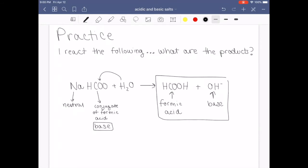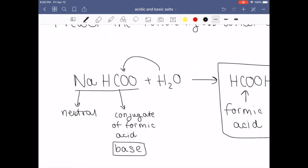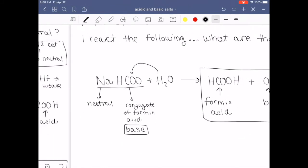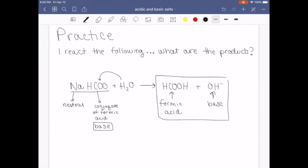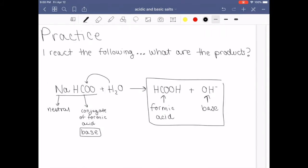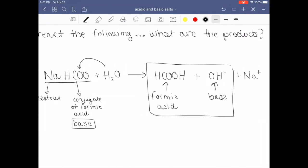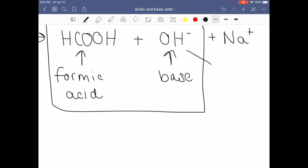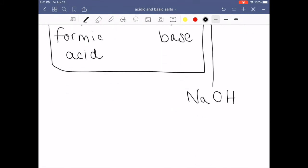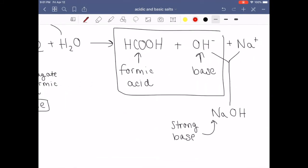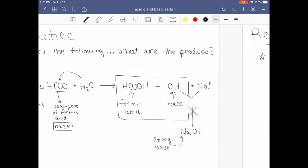And you know that because this salt right here is a base. So it has to steal a proton from water and then all that's left is hydroxide. And the one thing that I'm going to mention is that this reaction would also produce sodium ions. And the reason that these two do not form sodium hydroxide is because sodium hydroxide is a strong base. And I've been harping on my students to this, that strong bases do not form from salts. So that's my next slide here.